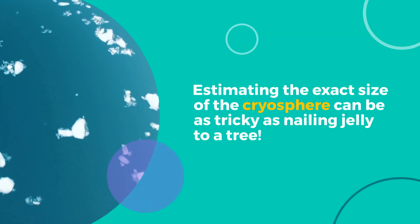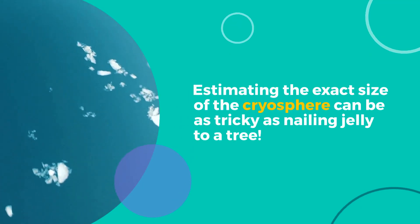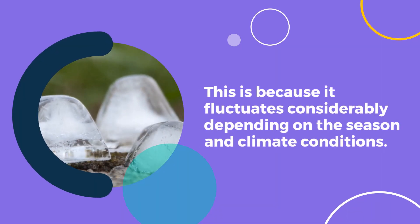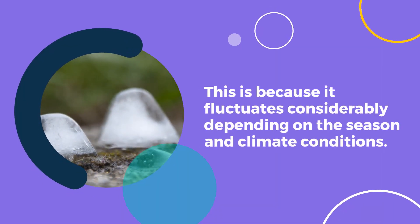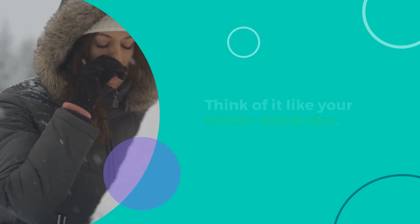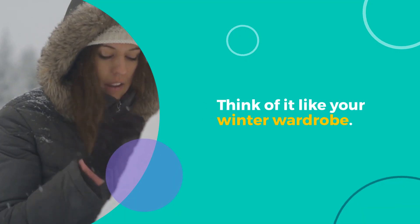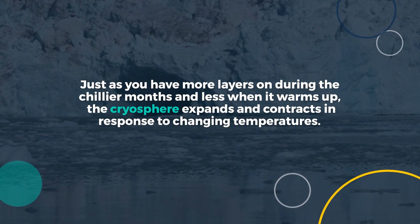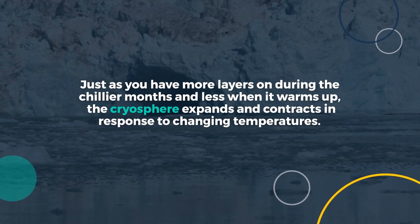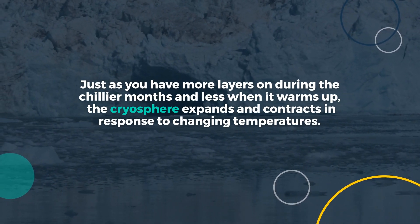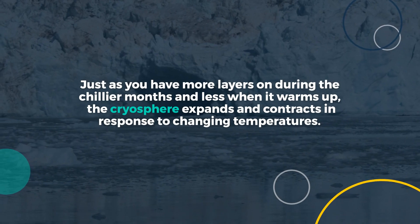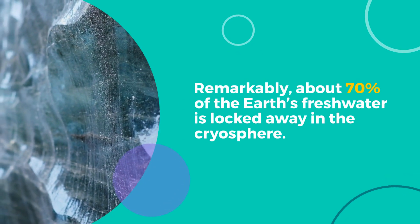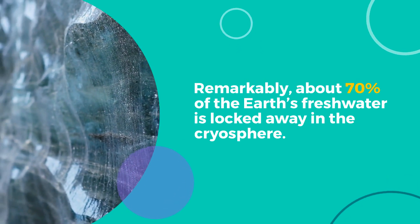Estimating the exact size of the cryosphere can be as tricky as nailing jelly to a tree. This is because it fluctuates considerably depending on the season and climate conditions. Think of it like your winter wardrobe — just as you have more layers on during the chillier months and less when it warms up, the cryosphere expands and contracts in response to changing temperatures. Remarkably, about 70% of the Earth's freshwater is locked away in the cryosphere.